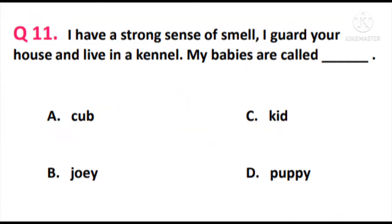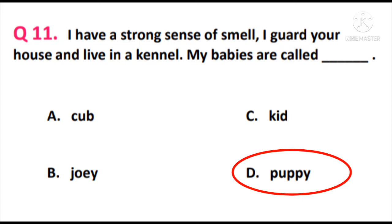Question 11. I have a strong sense of smell. I guard your house and live in a kennel. My babies are called dash. The answer is option D. They are dogs, and my babies are called puppies — so option D, puppy, is the correct answer.